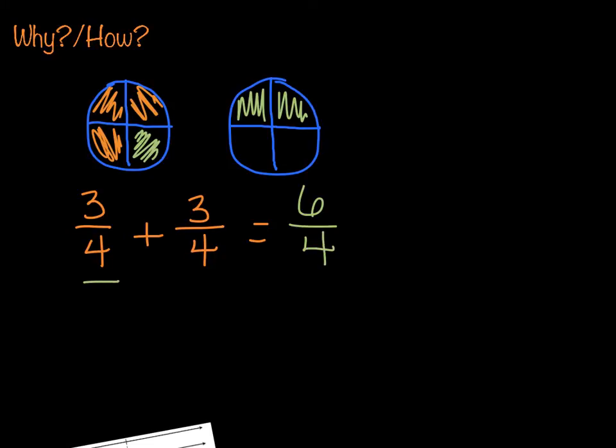Now notice that my denominator stays the same in all of these equations that we've done. The denominator never changes. But what happens to the numerator? The numerator is what we're adding together. So we're adding this three plus this three, and we get six.